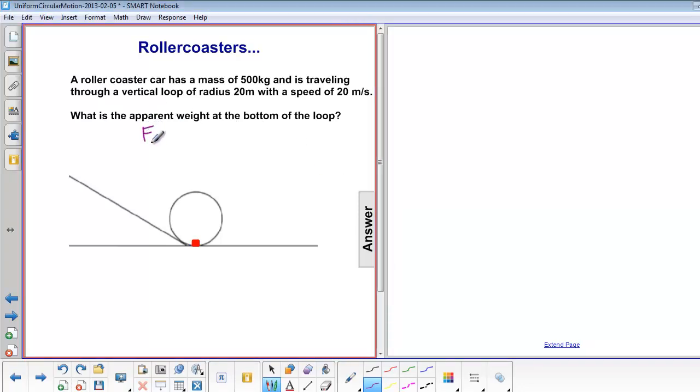By apparent weight, of course we mean normal force. Our free body diagram would have normal force up and mg down, where mg is shorter than normal force.